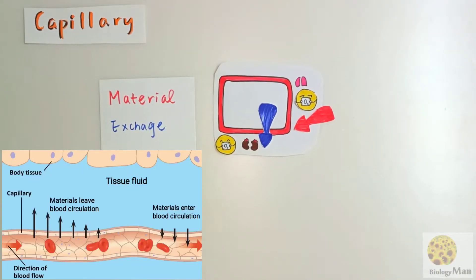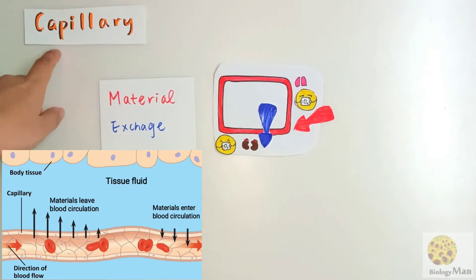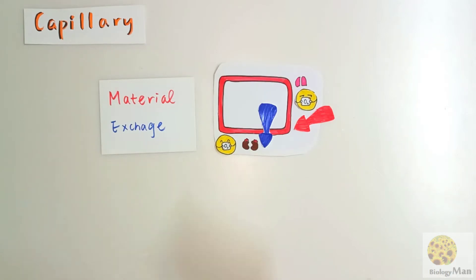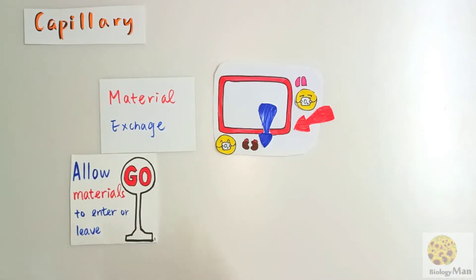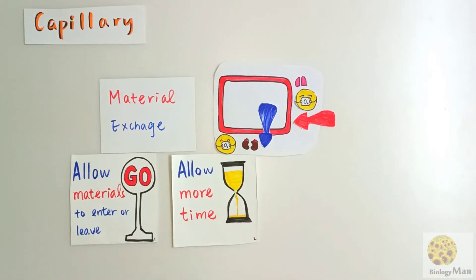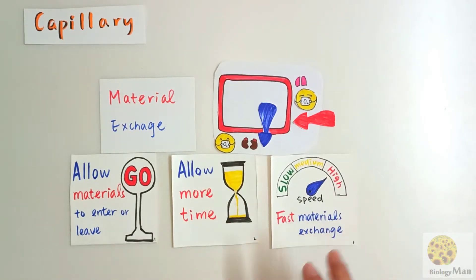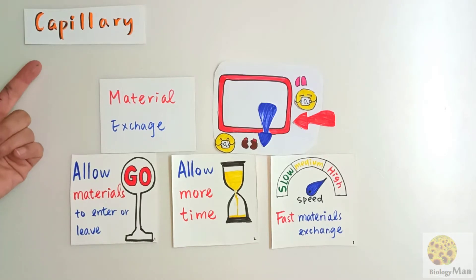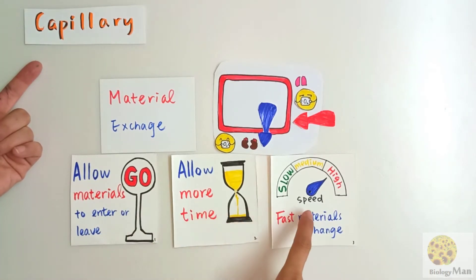Every structure or organ inside our body has its own job, and they always want to do that job well. In this case, the capillary is the one doing the job of material exchange. The first criteria is to allow material to enter or leave the circulatory system. The second is to allow more time for material exchange. The third is to enable a fast material exchange.